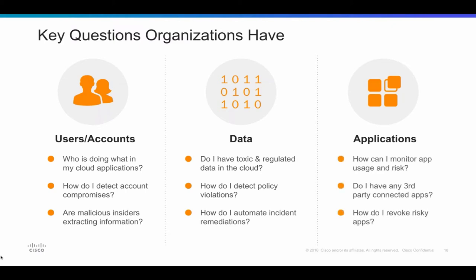On the application side, we talk about shadow IT — or shadow productivity — all the time. End users are typically just looking to be productive; they're not looking to cause damage to the organization. But we do want to be able to detect how users are self-enabling applications, whether they're connecting them to corporate systems in the form of third-party apps. And when we detect applications that might pose excessive risk, how do we revoke those accordingly?